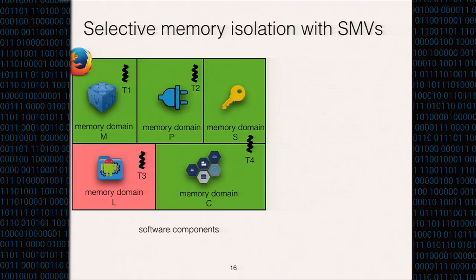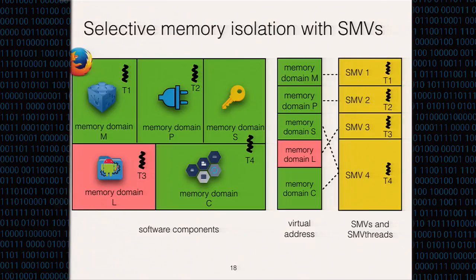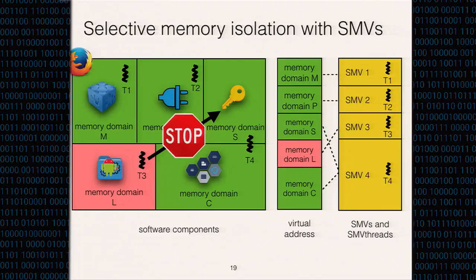Here is a high-level overview of what SMVs look like. There are five memory domains and four SMV threads in this example, and thread T4 is using two memory domains. Suppose the attacker compromised thread T3 executing in memory domain L. The compromised thread T3 is isolated by SMV3, which can only access memory pages in memory domain L. It is not possible for T3 to access the memory pages in memory domain S that stores the program secret, even though they are just threads living within the same process address space. Therefore, memory isolation in SMVs is per-thread isolation.